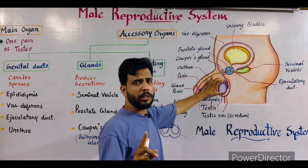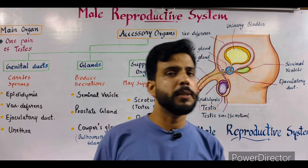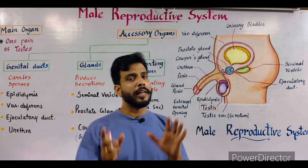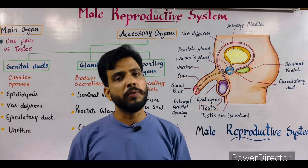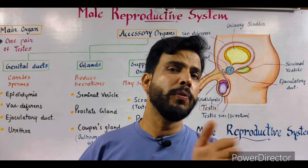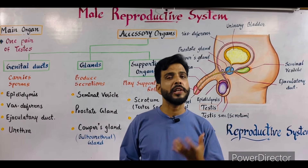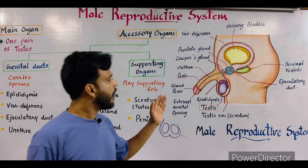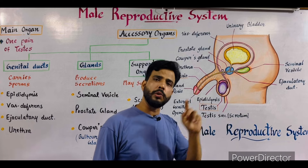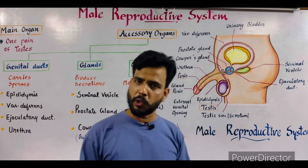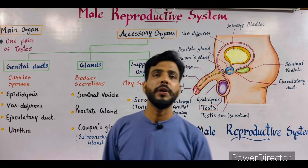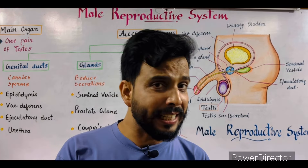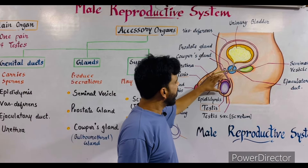The testes perform two important functions. The first function is spermatogenesis — the formation of sperm. The second function is to secrete the testosterone hormone. Testosterone is the main male hormone responsible for secondary sexual characters such as body hair, facial hair, and pubic hair. Testosterone is produced by special cells known as interstitial cells or Leydig cells, which are present inside the testes.